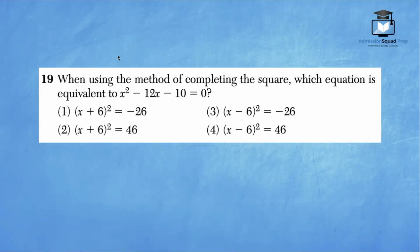Number 19. When using the method of completing the square, which equation is equivalent to x squared minus 12x minus 10 equals zero? Let's solve. We have x squared minus 12x minus 10 equals zero. Our goal here is to solve this quadratic equation by completing the square. Step one is to add C on both sides. So we start off with x squared minus 12x equals 10.